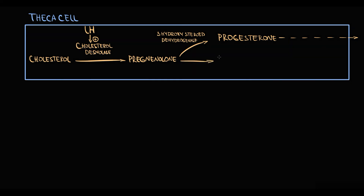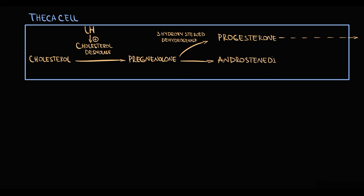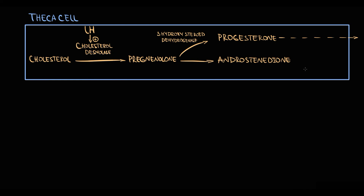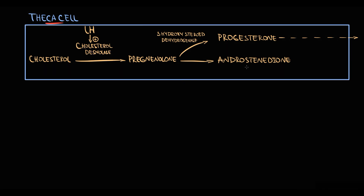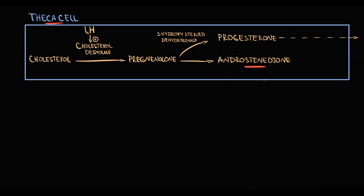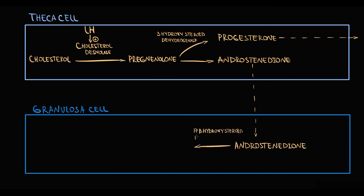The second option is that pregnenolone, through three consecutive reactions, can be converted into androstenedione. Androstenedione is a precursor of testosterone, but the problem is that theca cells do not have any enzyme to convert androstenedione further. So androstenedione diffuses into granulosa cells, where 17-beta-hydroxysteroid dehydrogenase converts androstenedione into testosterone.